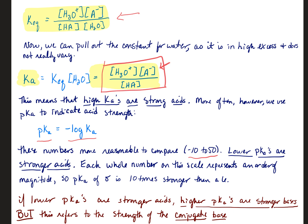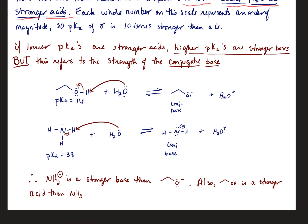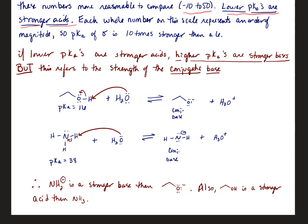Since this is the negative log, that means that lower pKAs are going to be stronger acids. So it's just the opposite. Each whole number on this scale, therefore, is an order of magnitude. So if you have a pKA of 5, that's going to be 10 times stronger than that of 6. So if you have lower pKAs or stronger acids, that also means that higher pKAs are stronger bases. But that refers to the strength of the conjugate base.